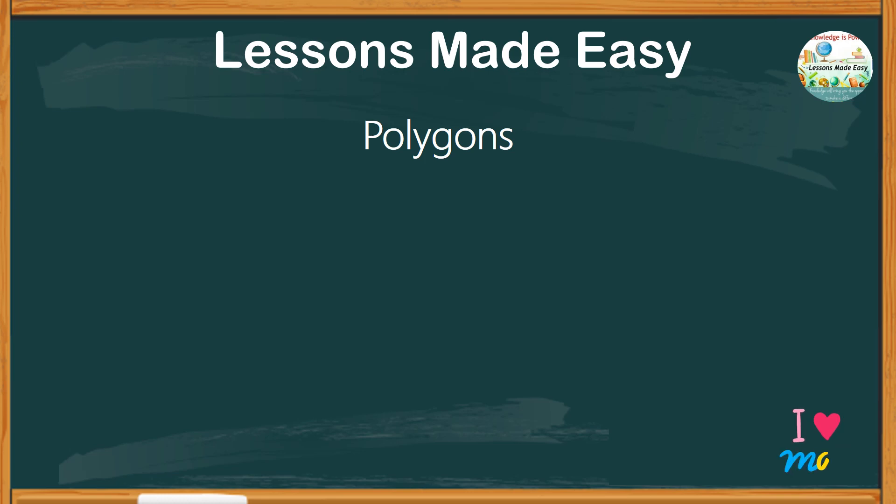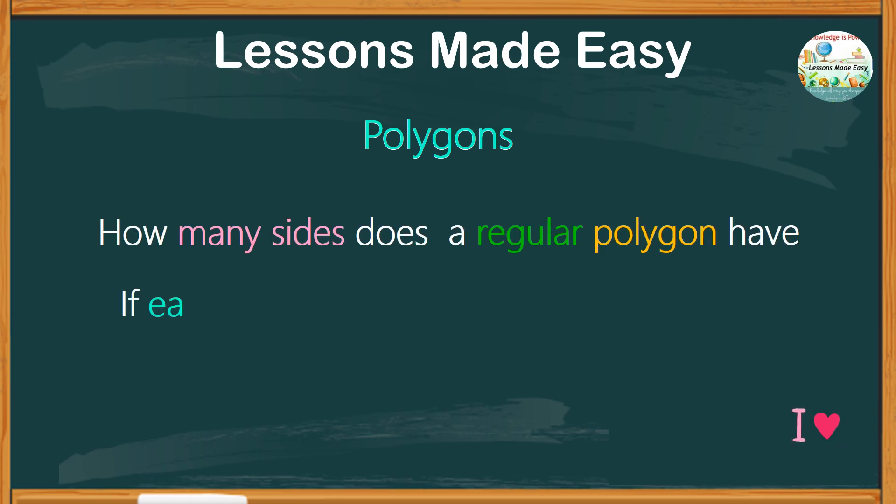Let's try solving this word problem related to polygons. The problem goes like this: how many sides does a regular polygon have if each exterior angle has a measurement of 15 degrees?